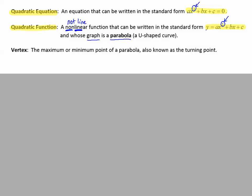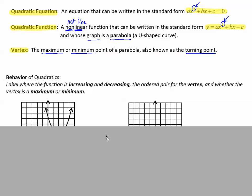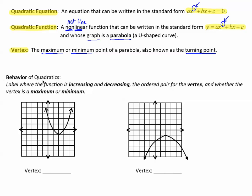The parabola will have a vertex. The vertex is the maximum or minimum point of the parabola, also known as the turning point. Let's discuss the behavior of quadratics. We've talked about this a little bit before with lines.